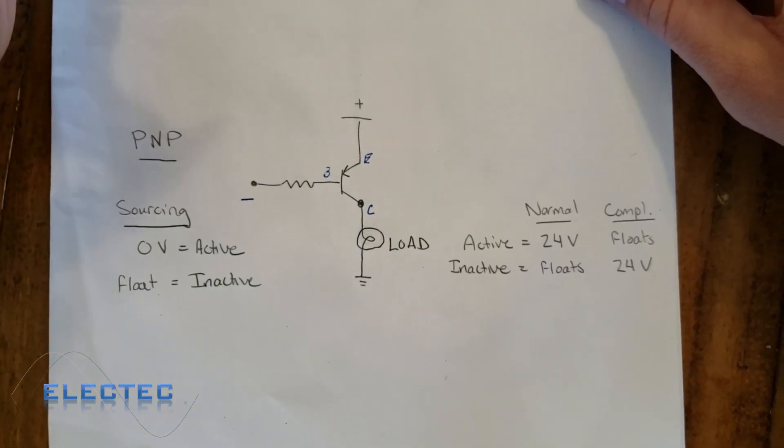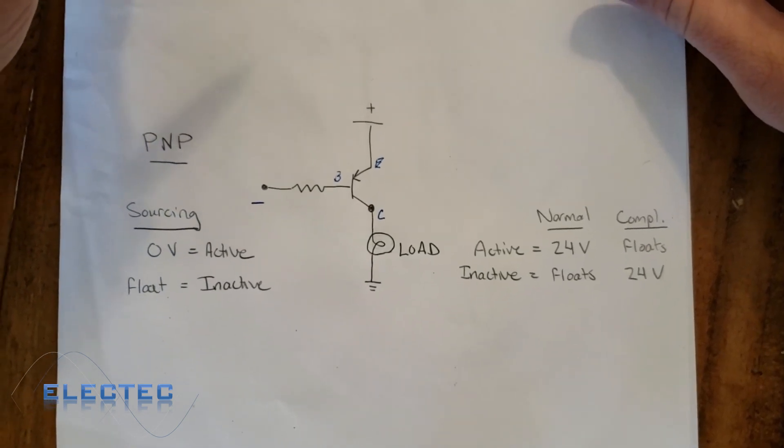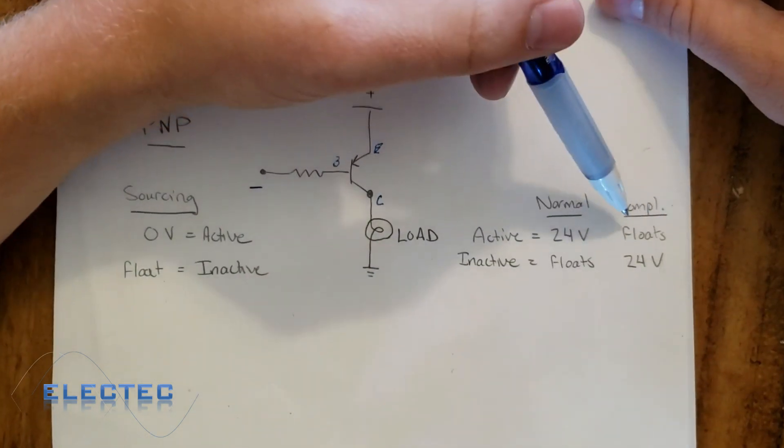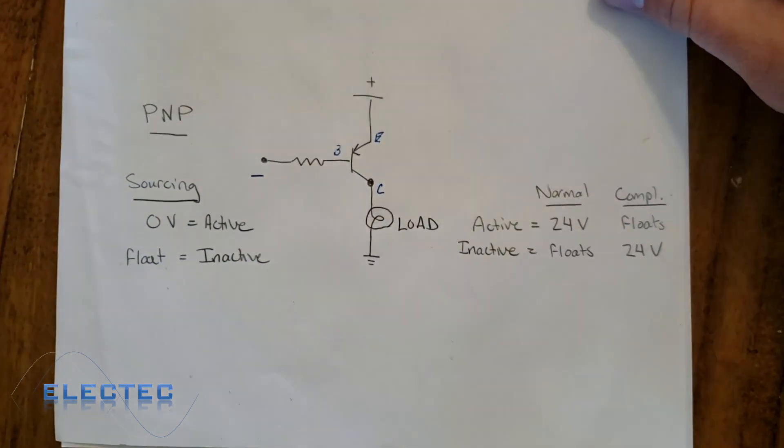So the same thing goes for the complementary, because a lot of sensors have that complementary option. The complementary side is when the transistor is active, it floats, and when it's inactive, it's 24 volts.